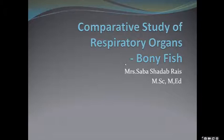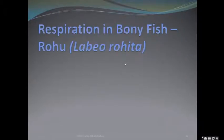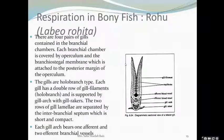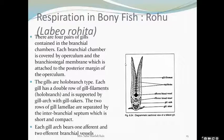Now let us begin with today's topic — the bony fish. The first example we are going to learn is the Rohu, whose scientific name is Labeo rohita. It is a fresh water fish and a very common fish. We will also be learning about the two special accessory respiratory organs present in this fish.